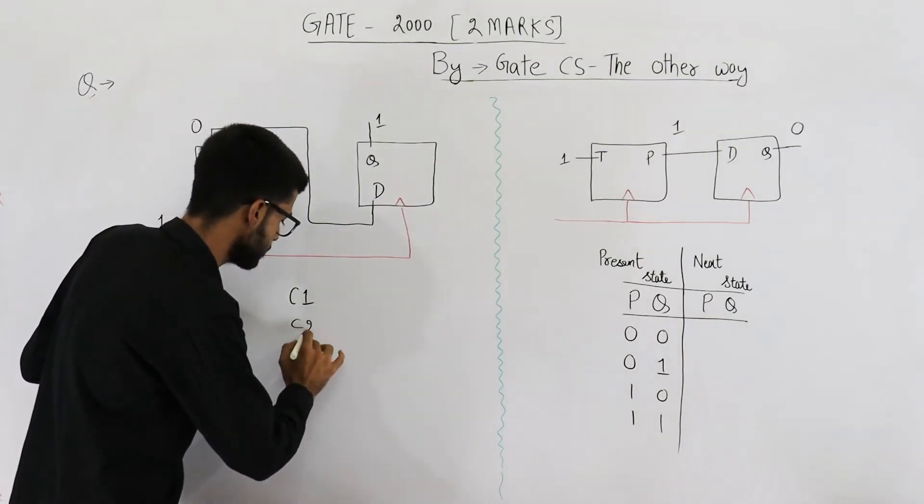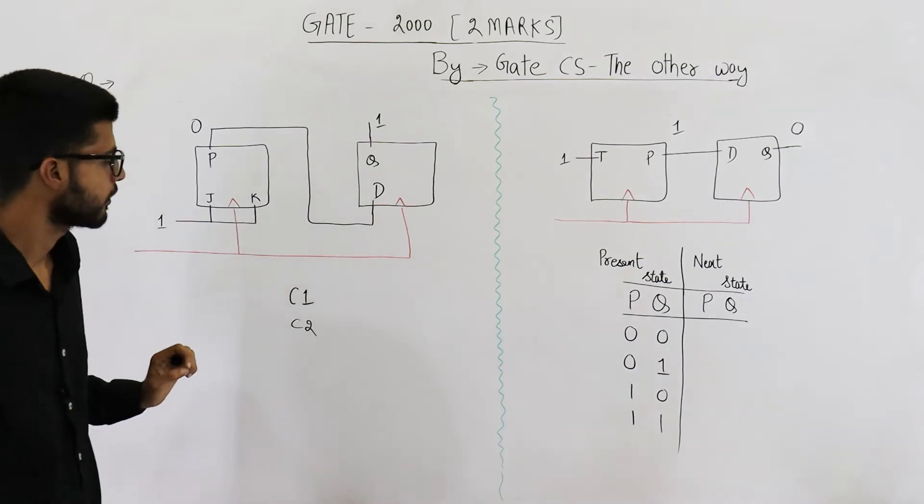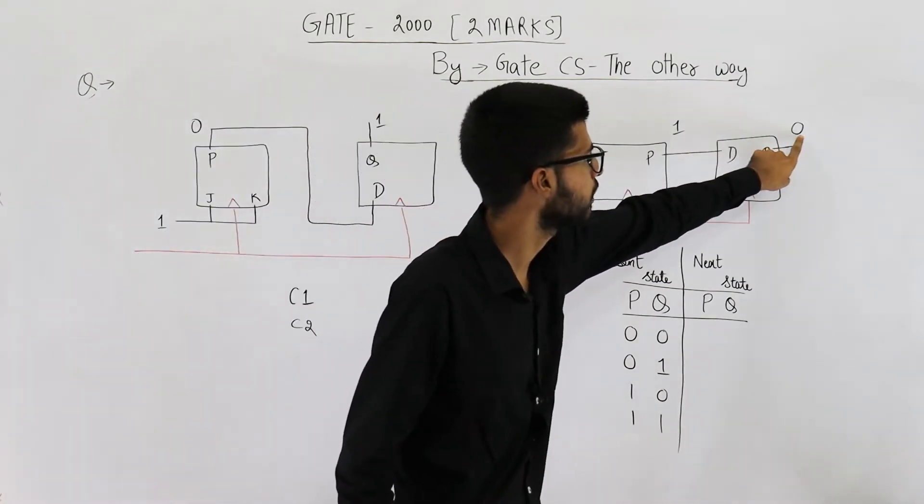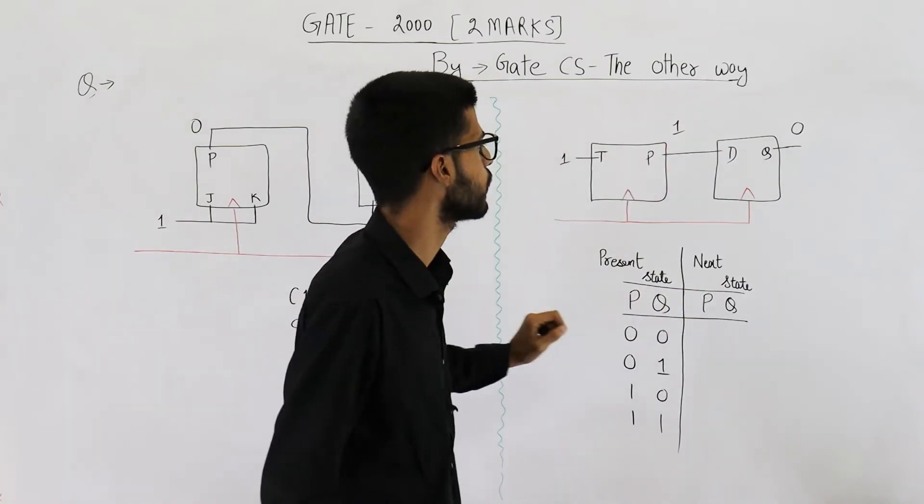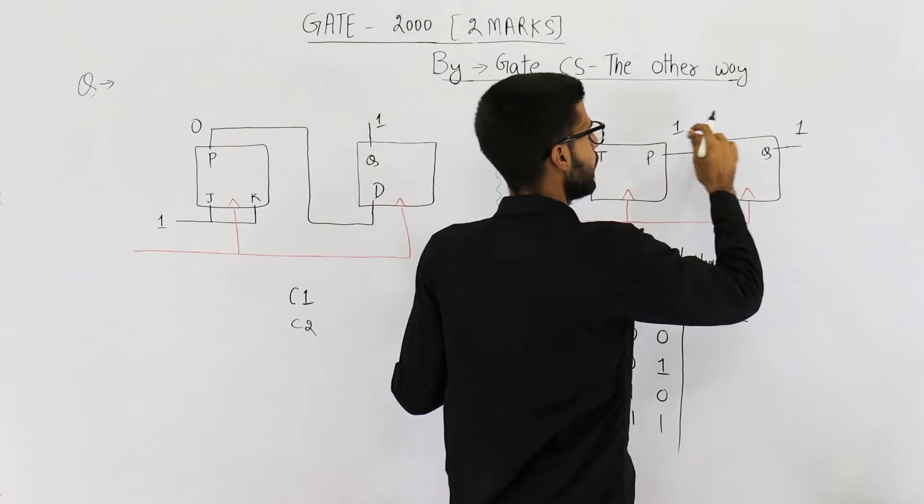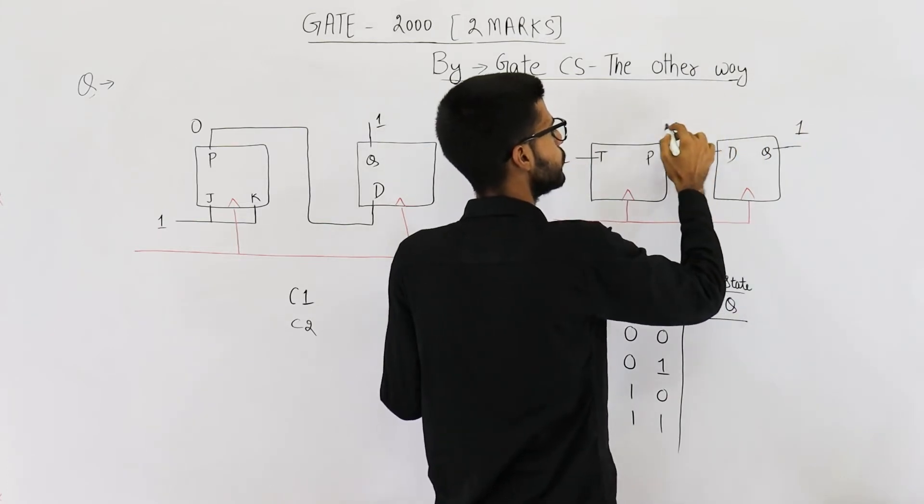Now let's see what will happen when second clock signal is given. When second clock signal is given whatever is present here will be transferred here and this one will toggle. So this one goes here and this will toggle to zero.